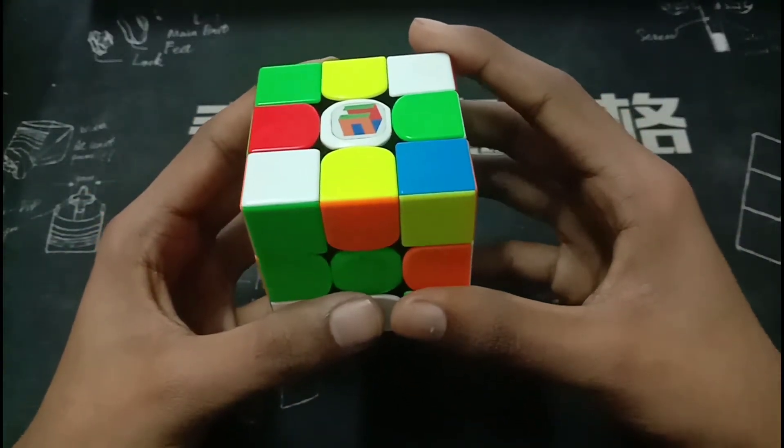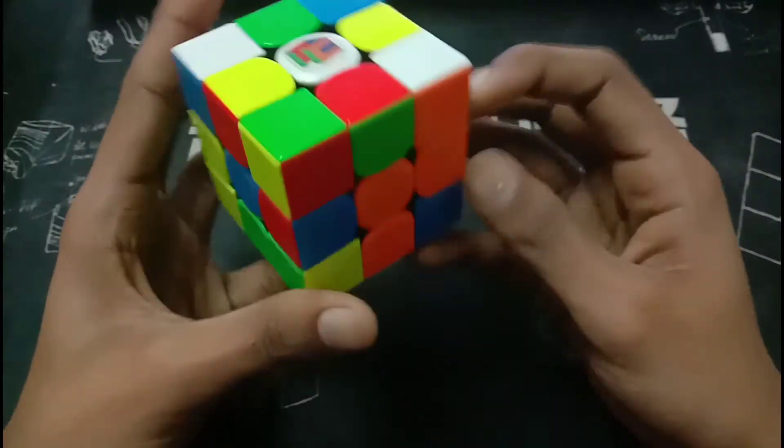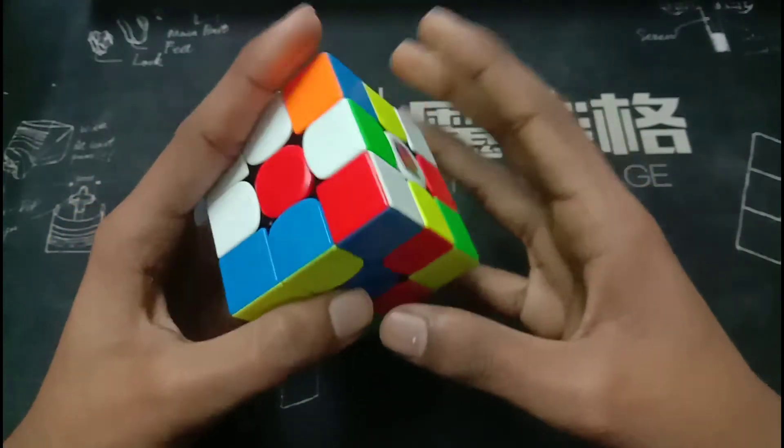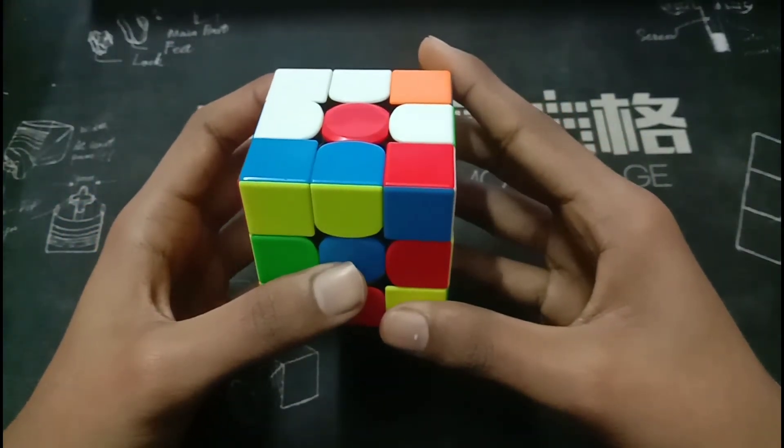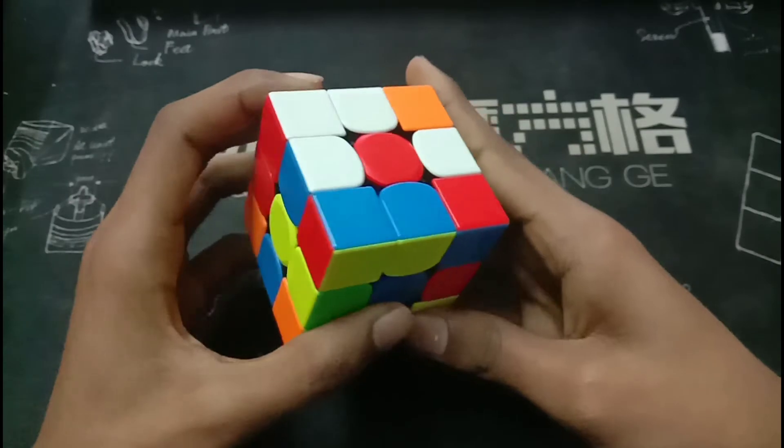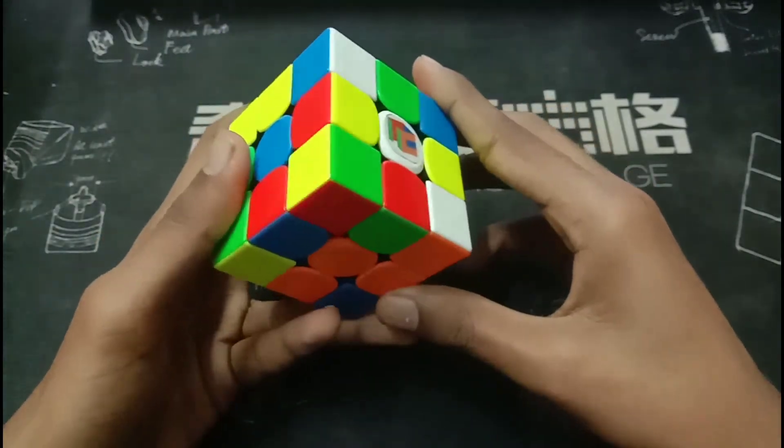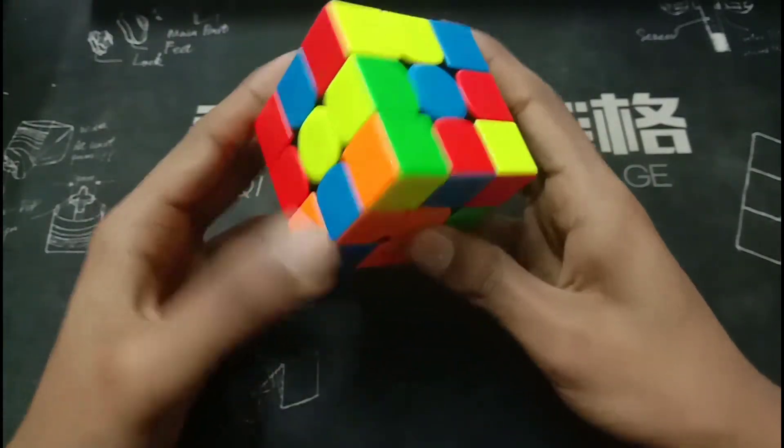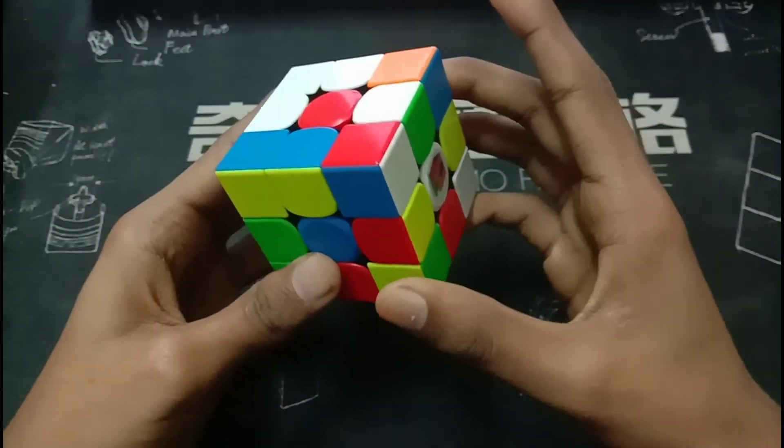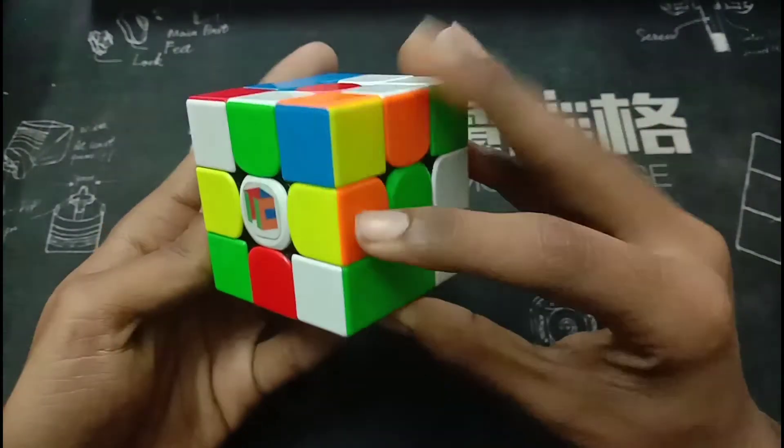Okay, so for this scramble, for inspection, Felix does Y2 and Z. So in this solve, he makes an X cross. So what he does is he finds the pieces here, here, here and here.